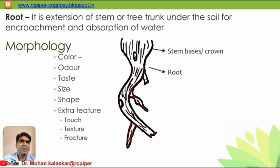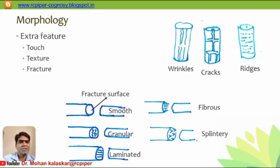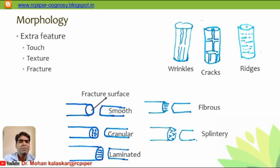Roots can be of different shapes — particularly cylindrical, straight, or tortuous. Next, under extra features, we study touch. Touch means when we rub the root between the thumb and index finger we feel different types of surface sensation — it may be slippery, rough, or have some specific texture. Texture refers to structural features such as longitudinal lines called wrinkles, which are produced when a fleshy root shrinks upon drying.